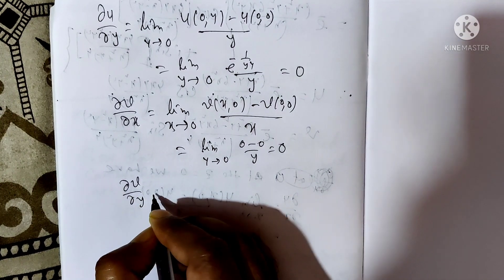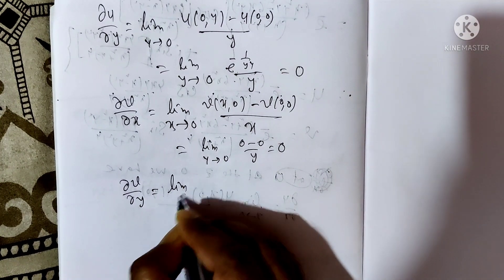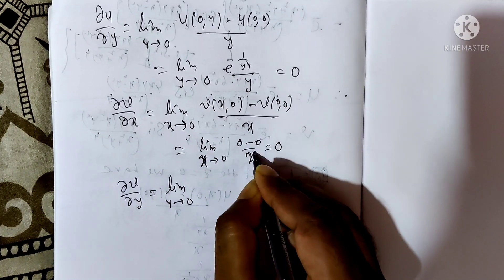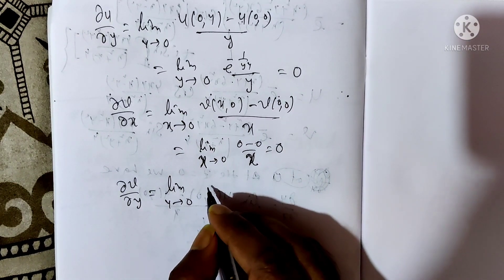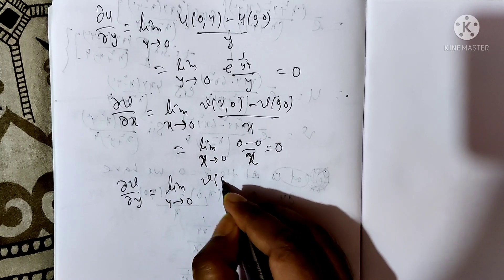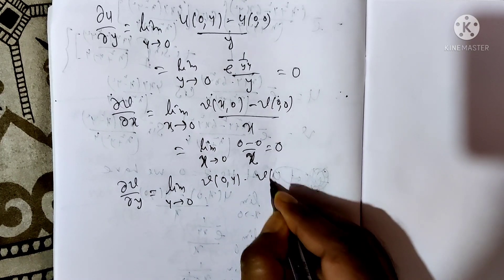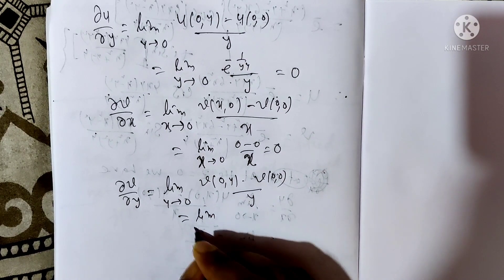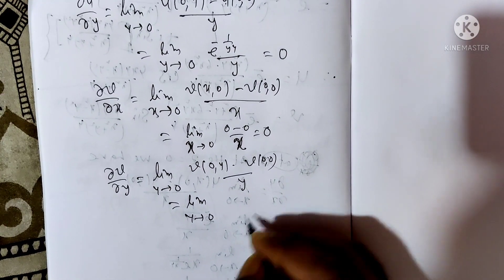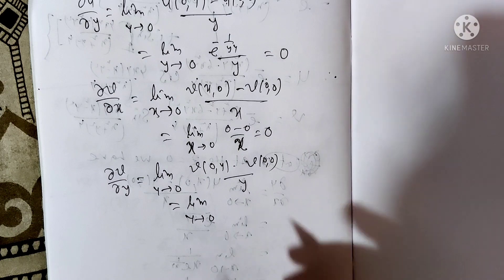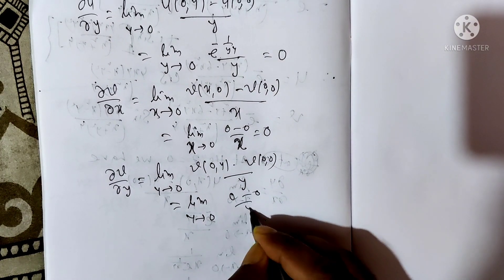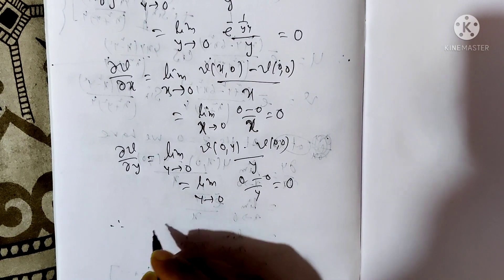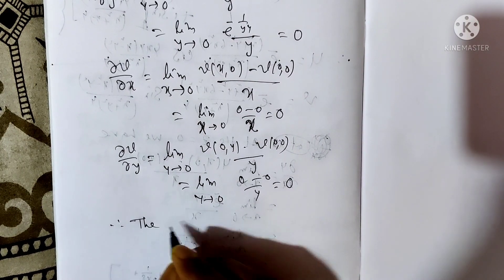∂v/∂y = limit as y→0 of [v(0,y) - v(0,0)] / y = limit as y→0 of (0 - 0) / y = 0. Therefore the function f = u + iv satisfies the Cauchy-Riemann equations at the origin.